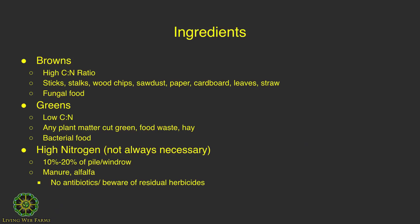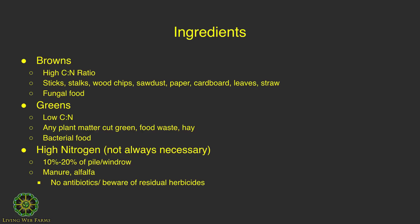For ingredients, we need brown material — carbonaceous stuff that has a high carbon-to-nitrogen ratio. It's going to be sticks, stalks, wood chips. Sawdust has like a 5,000-to-1 carbon-to-nitrogen ratio, so even though it has a lot of surface area, it actually takes longer to break down because of that extremely high ratio. And then paper, cardboard, leaves, straw — anything that's stalky.